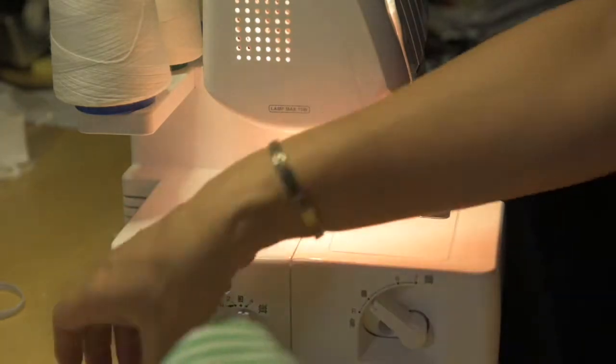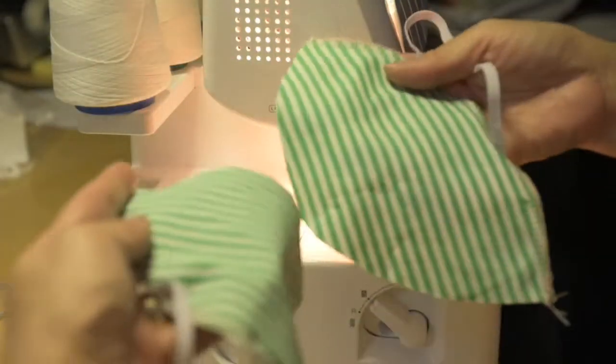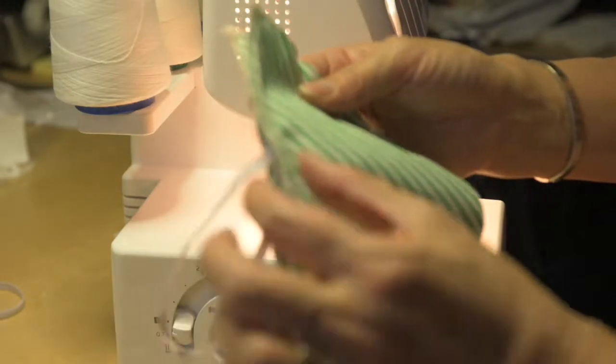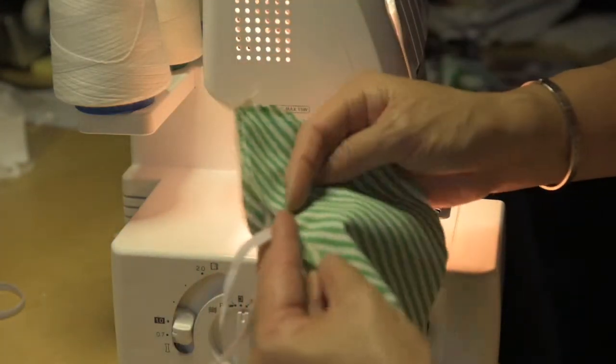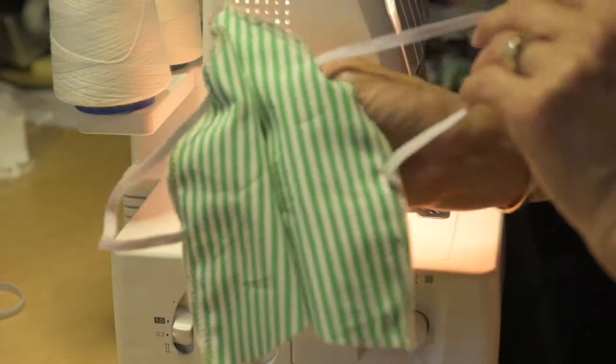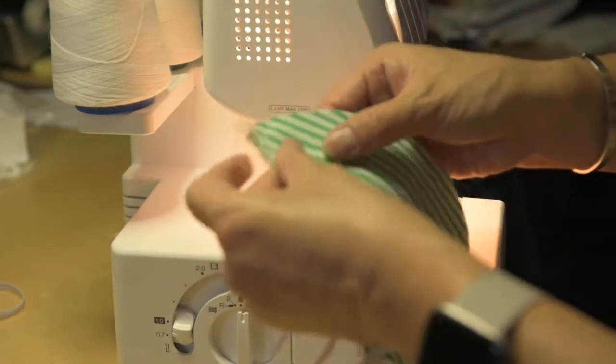Now I'm going to do the center seam of the mask. I'm going to match those together and put them right sides together. Eventually I'm going to turn that outside edge like that and stitch it down on my sewing machine. So right now this becomes the right side. I'll put those together and do the main seam down the middle.